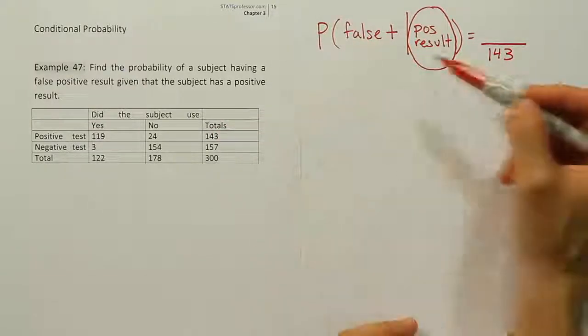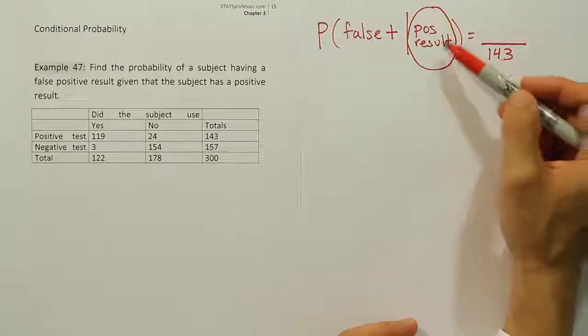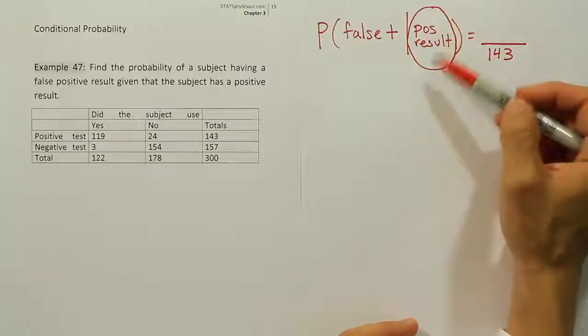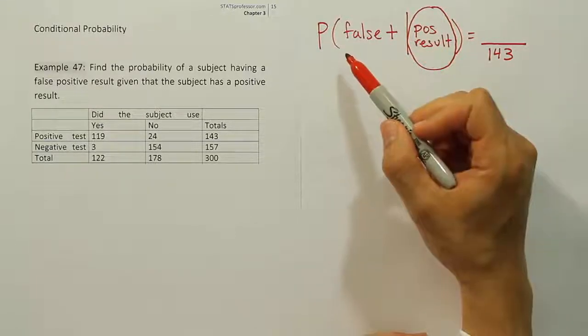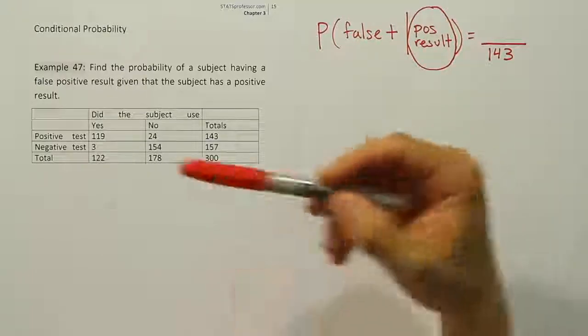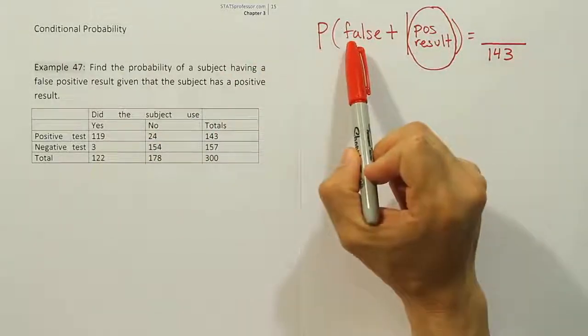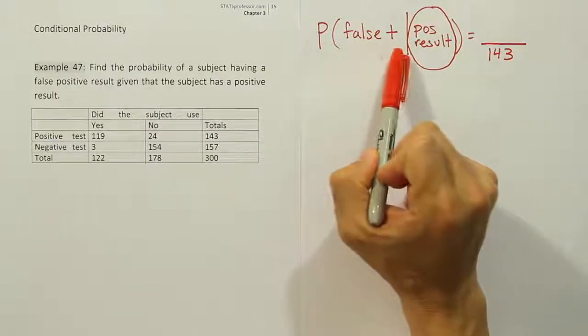And one of them is a total. That's going to have to be our denominator then. So we already have half of the problem solved just by putting 143 at the bottom here, because that's the grand total for the positive test result row, which is the only row that we're paying attention to here.